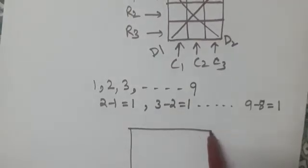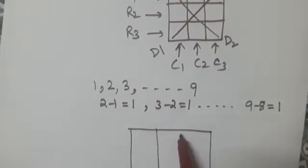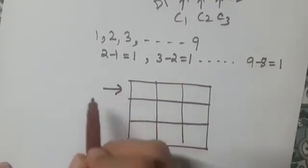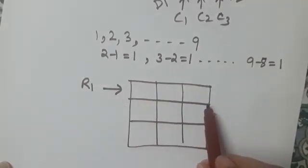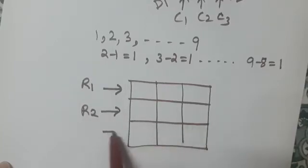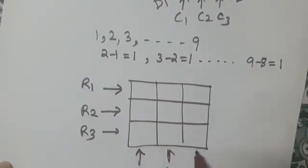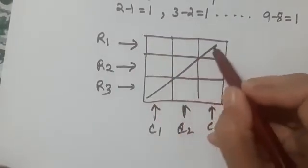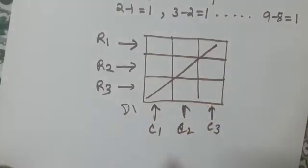Basically we need to put the digits in these nine boxes so that if we add the three numbers in any of the three rows, three columns, or any diagonal, the sum is the same. The numbers in the first row should have the same sum as the numbers in the second row and the third row. The same goes for the columns C1, C2, and C3. Similarly, if we take three numbers in any diagonal and add them, we should get the same sum. So are you ready to learn the technique?